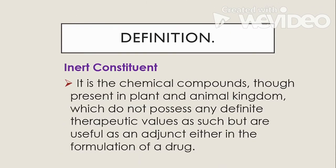Next is the inert constituent. It is chemical compounds present in the plant and animal kingdom which do not possess any definite therapeutic values but are useful as an adjunct in the formulation of a drug. For example, starch contains constituents important in the production of other drug products and is used as a diluent and thickener in making tablets.